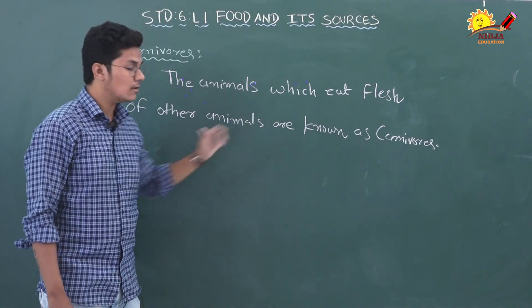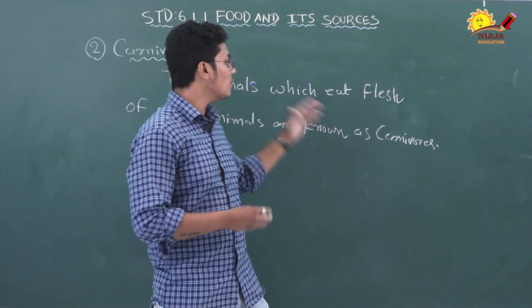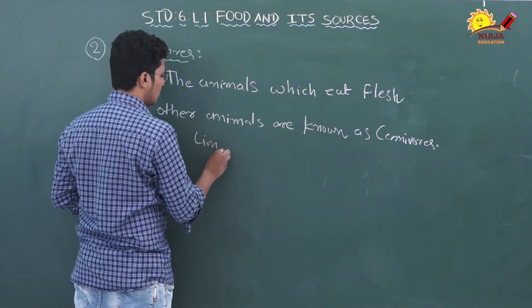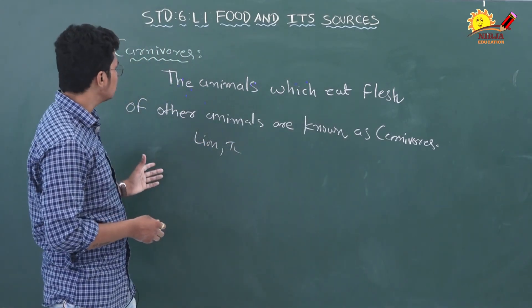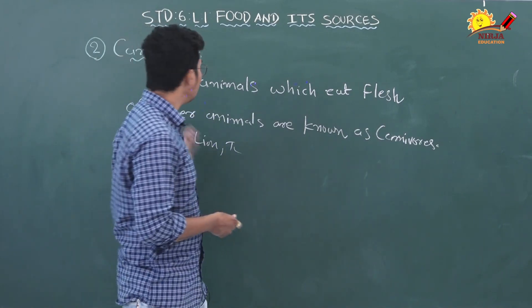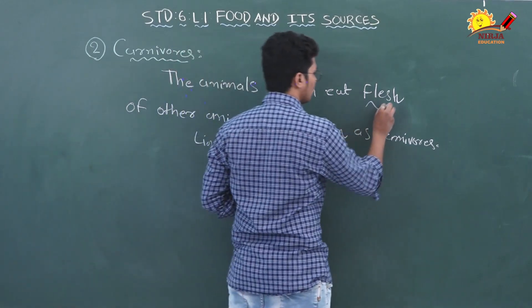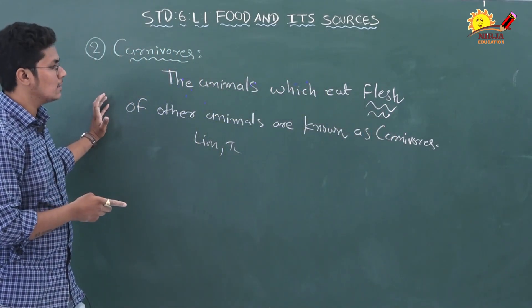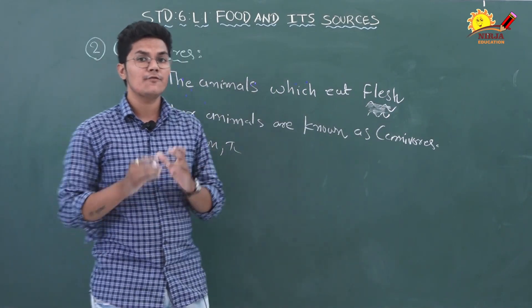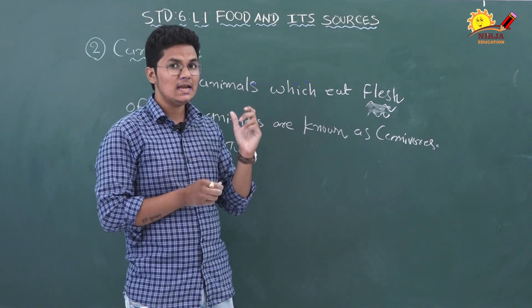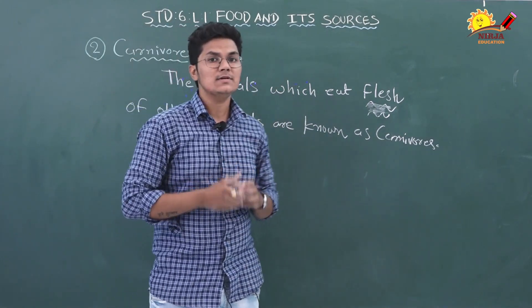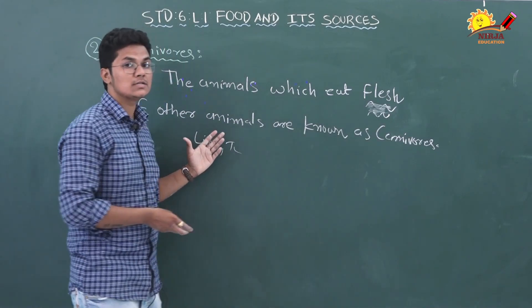The next category is carnivorous. Animals which eat the flesh of other animals are known as carnivorous. Examples are lion, tiger, eagle, snakes, and spiders. We humans are also carnivorous because we eat meat like fish. What does flesh mean? Flesh means the soft substance made of fat and muscle which is between the skin and bones — that is flesh. The animals that eat flesh of other animals are known as carnivorous.